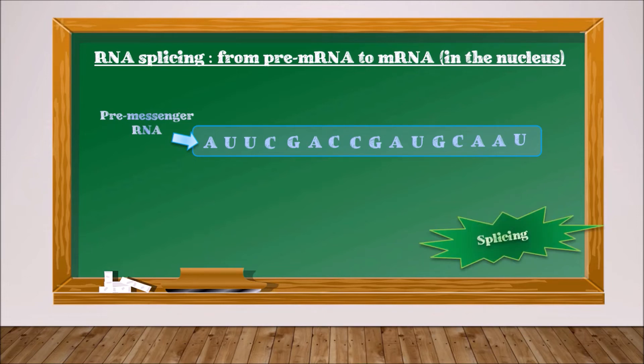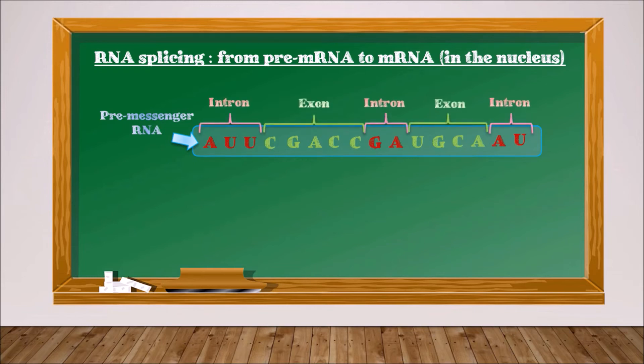This molecule consists of different parts: introns and exons. Introns are the non-coding parts that are useless in protein production. Exons are the coding parts that will be useful in protein production.